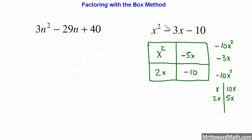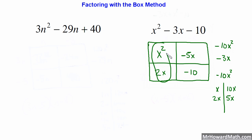If you're first learning this it just takes practice, so watch the video a few times until you get the steps down. Once you get it down it will make factoring very easy for you. The next thing we have to do is pull out greatest common factors from this column, this column, this row, and this row.